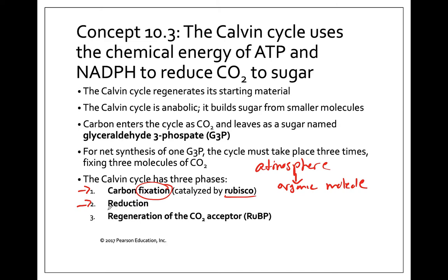Then we're going to see reduction, a process in which we gain electrons donated by NADPH. And because it is a cycle, we will have to regenerate our starting carbon acceptor molecule, which is RuBP. When carbon enters the cycle it enters as CO2, which has one carbon. We typically leave the cycle as glyceraldehyde-3-phosphate, which you can remember as G3P.